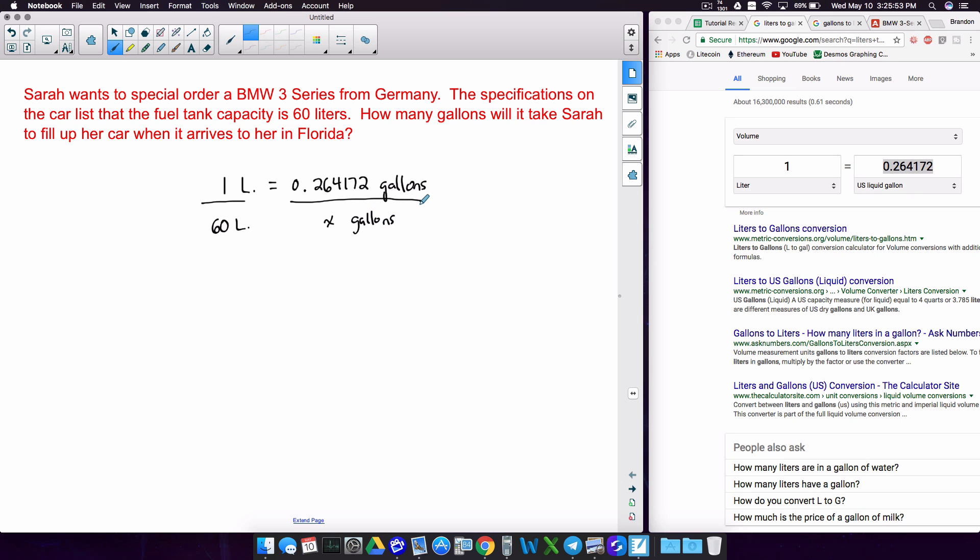You're not expected to probably memorize this conversion. You probably will be given this in your math class or whatever problem you may be working on, some standardized test or something like that. Well, to solve this proportion, we just cross multiply and divide. So we want to multiply these two numbers together, and then we want to divide by the number getting multiplied by x.